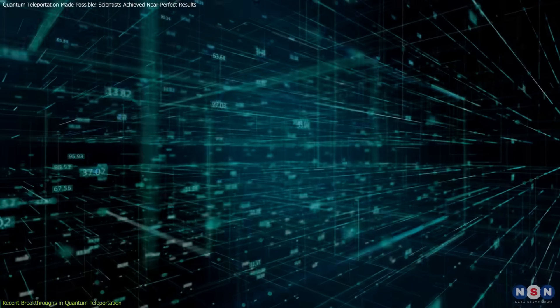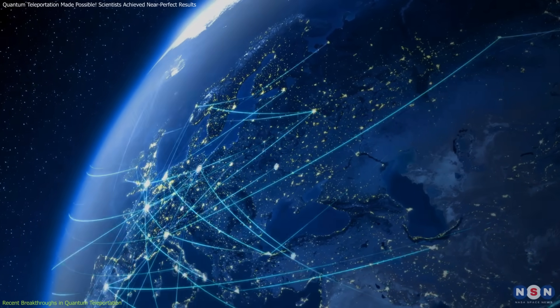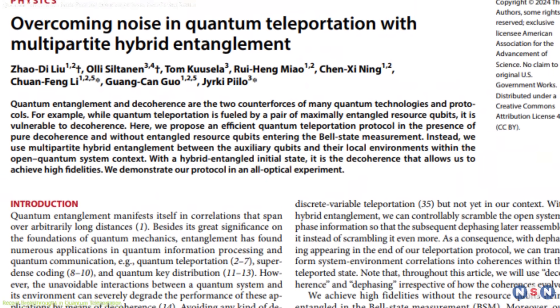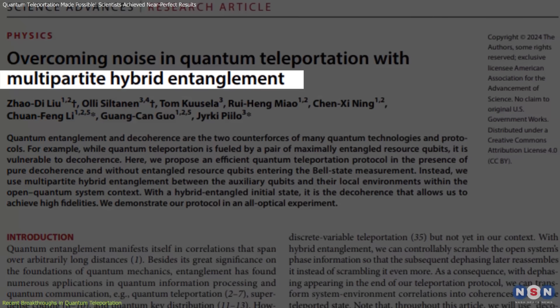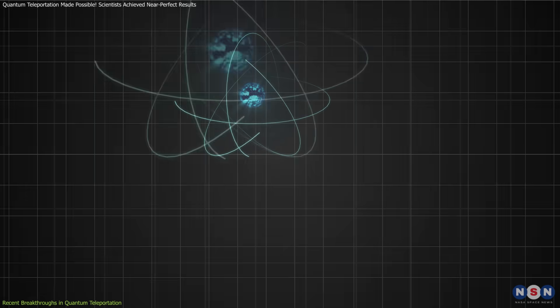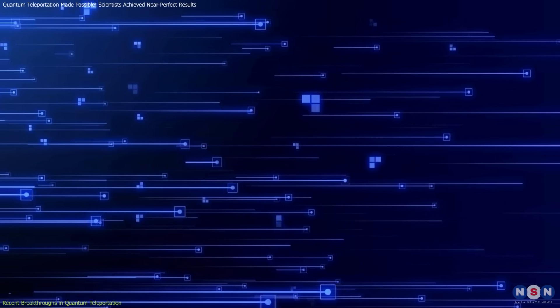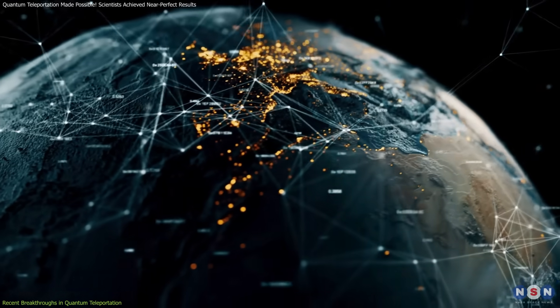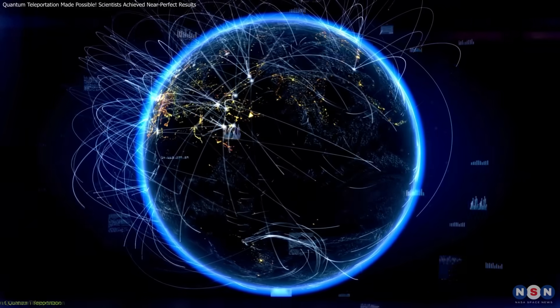Instead of separate infrastructures, quantum and classical communication can merge, making the technology far more practical and scalable. Even more remarkable, in May 2024, researchers found that certain types of noise, long considered a hindrance to quantum systems, could actually enhance teleportation quality. By utilizing a method called multipartite hybrid entanglement, they achieved near-perfect teleportation even in challenging environments. This discovery flips conventional wisdom on its head, demonstrating that what once seemed like an obstacle could now be an asset. These advancements collectively show that quantum teleportation is not just a theoretical possibility, but a feasible technology, ready to transform global communication.